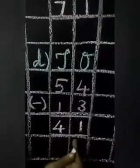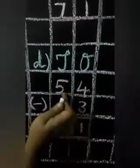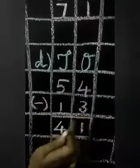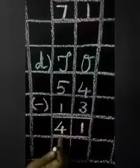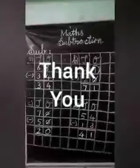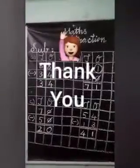Now we have 41. So 54 minus 13 is equal to 41. Thank you children, have a wonderful day — bye bye!